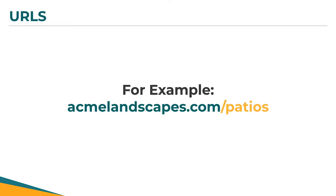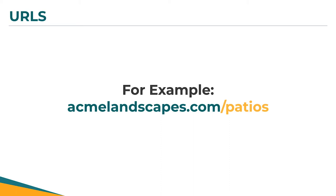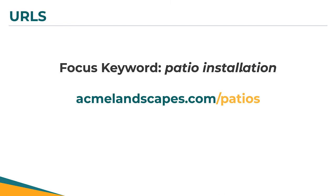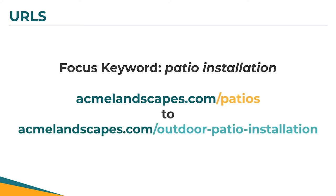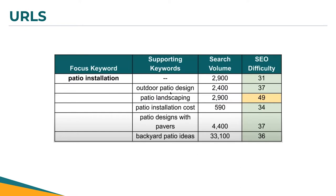In this example with Acme Landscapes, most businesses just roll with whatever the page is called — so in this case, it's just 'patios.' But to optimize it, you'd go back to your keyword research, look at the focus keyword you chose, and look at supporting keywords for that service. Their focus keyword is 'patio installation,' and a better optimized URL would be something like '/outdoor-patio-installation' — they've included their focus keyword and added an additional keyword from their keyword research.